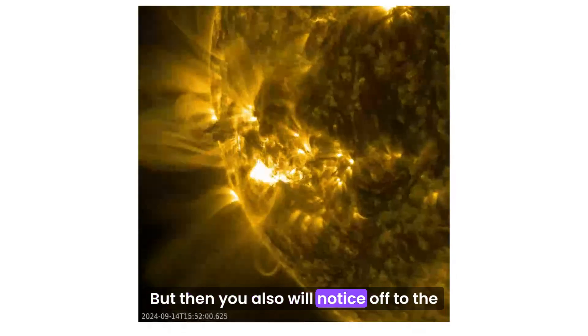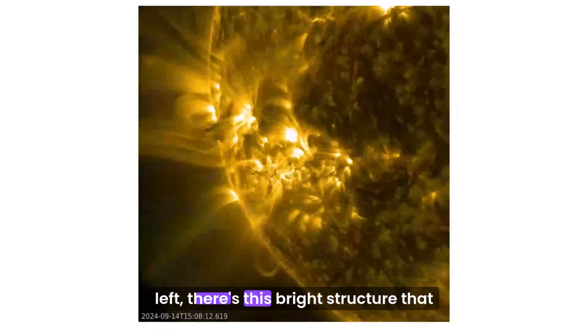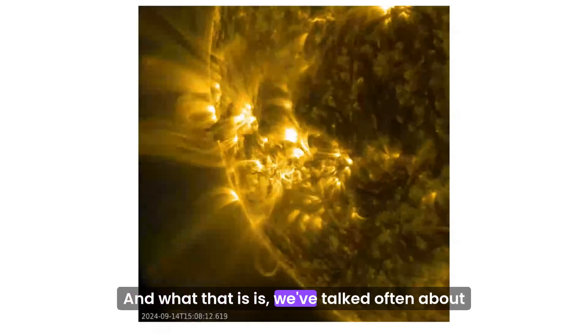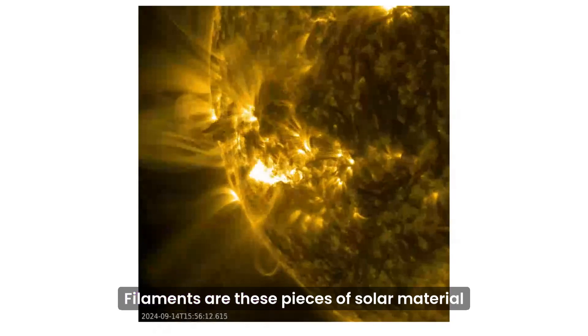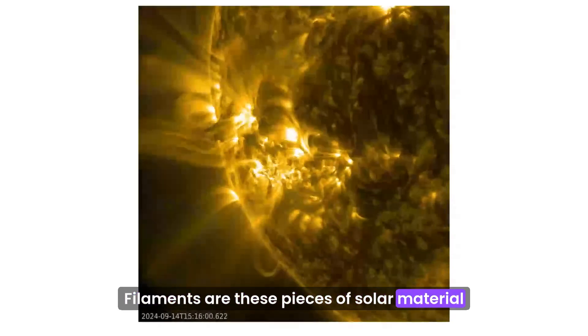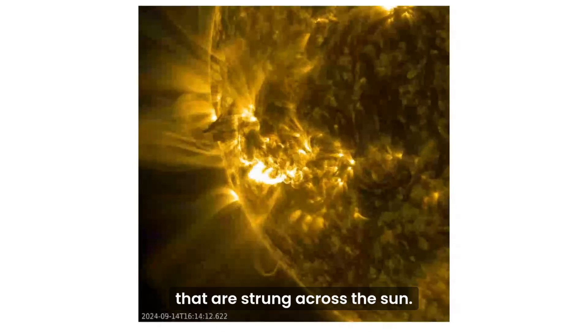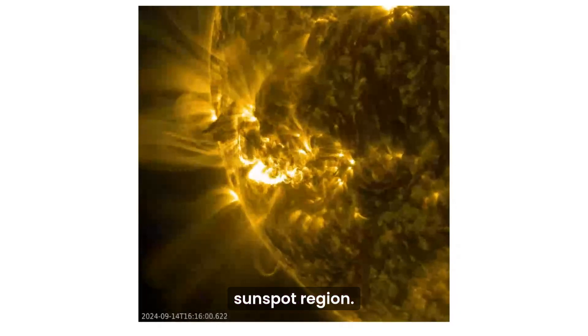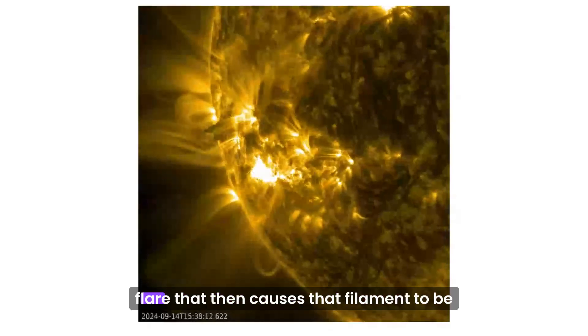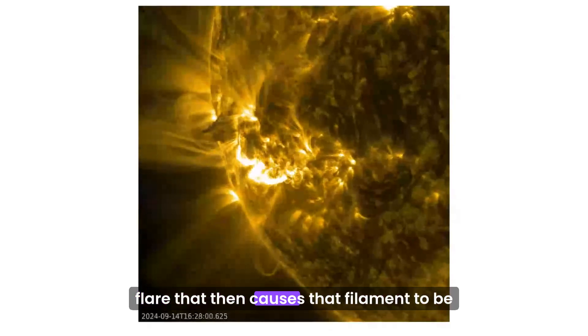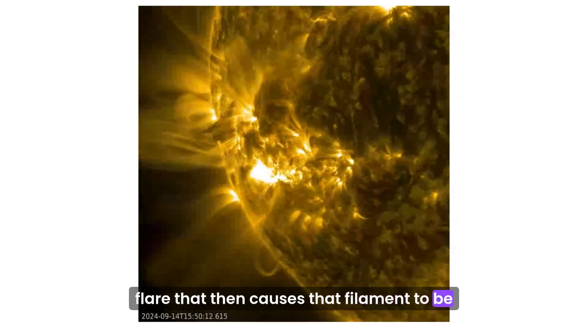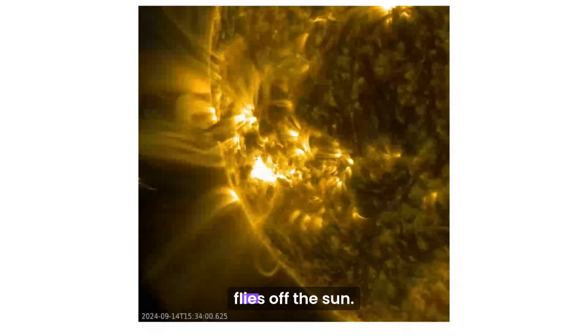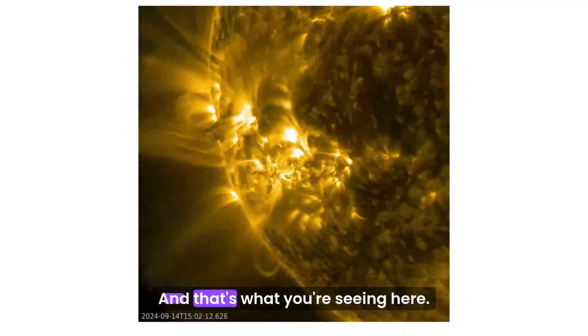But then you also will notice off to the left, there's this bright structure that comes out. And what that is, is we've talked often about filaments. Filaments are these pieces of solar material that are strung across the sun. Sometimes those filaments will be across a sunspot region. And so when that happens, you can have a flare that then causes that filament to be basically set free. And that filament very quickly and violently flies off the sun. And that's what you're seeing here.